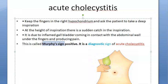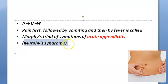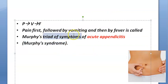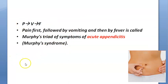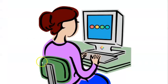Murphy's triad is a group of symptoms — that is why it's called a triad or syndrome. A syndrome is a group of symptoms reported by the patient. So remember: Murphy's sign is something the doctor elicits by touching the patient, while Murphy's triad or syndrome refers to symptoms the patient describes.